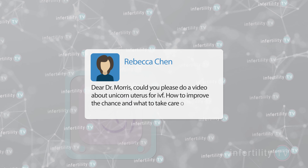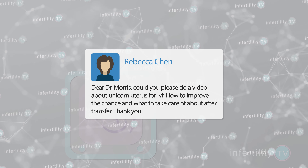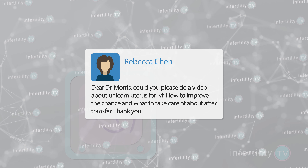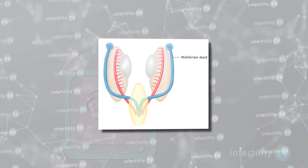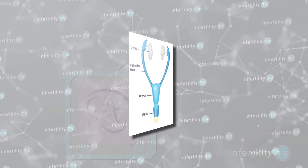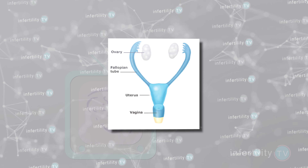Rebecca Chen asked if we could do a video about a type of uterine abnormality known as a unicornuate uterus. There are a variety of uterine abnormalities that a woman can be born with. To understand these abnormalities, it's important to know how the uterus and fallopian tubes are formed in the first place. During fetal development, there are two tubes known as Mullerian ducts which move from the sides to the middle of the abdomen. Eventually, the lower part of the tubes fuse together — this becomes the uterus.